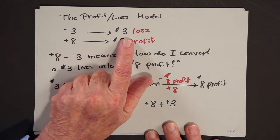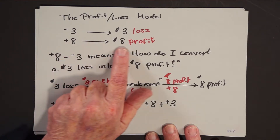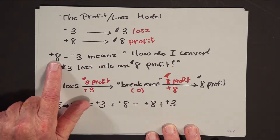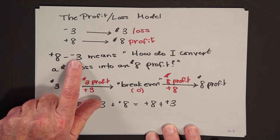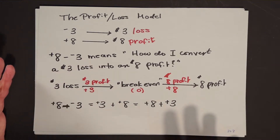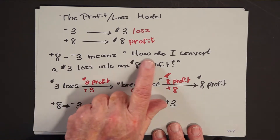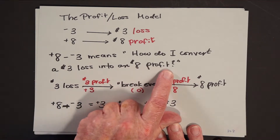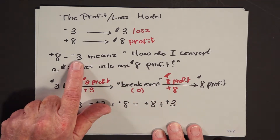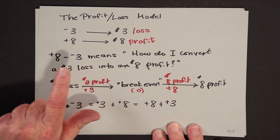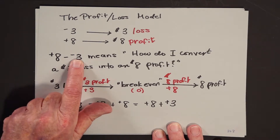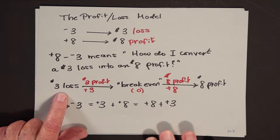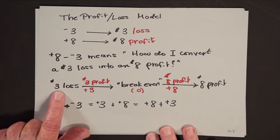Negative 3 meant a $3 loss. Positive 8 meant an $8 profit. So something as complicated as positive 8 minus negative 3, to me, just meant how do I convert a $3 loss into an $8 profit? In other words, this still meant to me: what do I have to add to a $3 loss, negative 3, to create an $8 profit, positive 8? So in my mind, it wasn't very difficult at all.